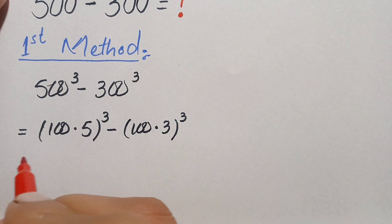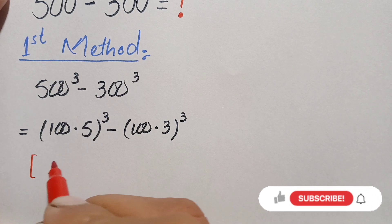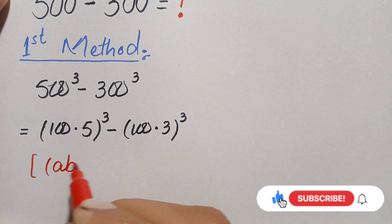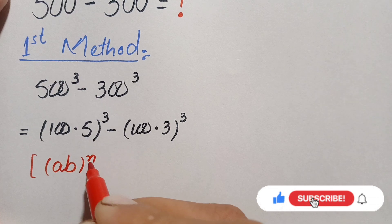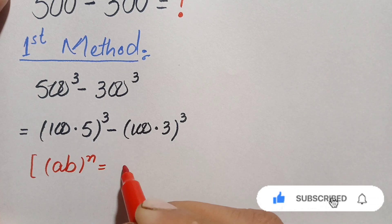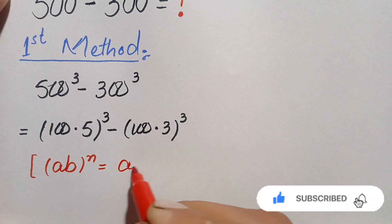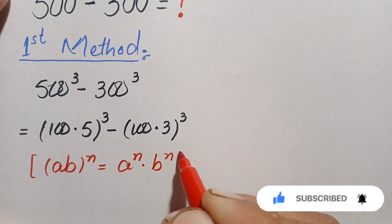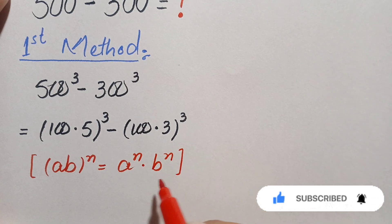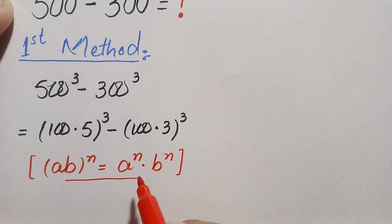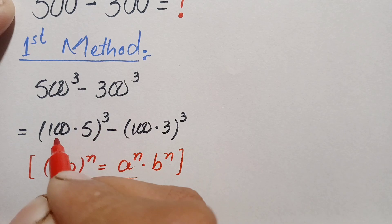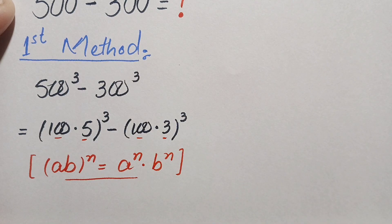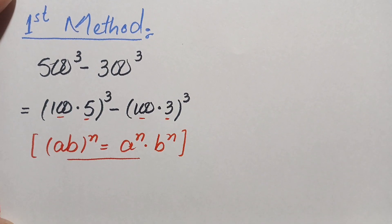Now in both terms of this equation we will use an exponential identity. We can write (a × b) raised to power n as a raised to power n times b raised to power n. Using this identity, the power will be applied on both numbers in both terms.